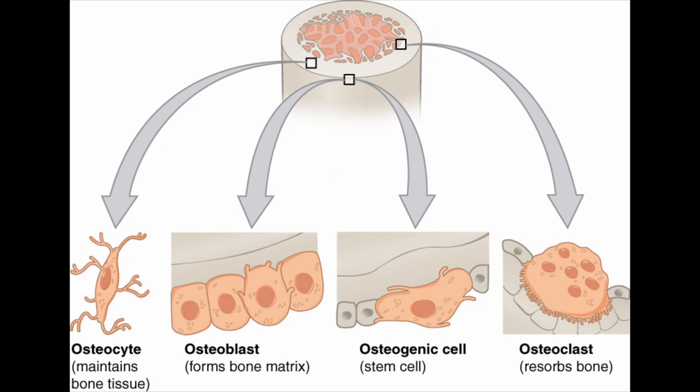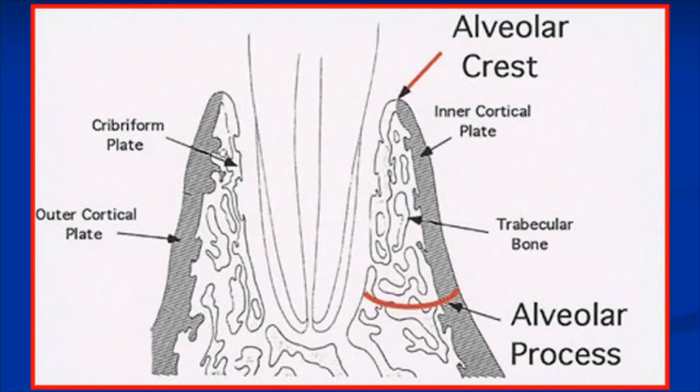Looking at this picture, we have cortical plates — both outer and inner — which are the stronger portions of the alveolar bone. We also have the soft and spongy trabecular bone. The layer of alveolar bone immediately adjacent to and contacting the root of the tooth has very fine small perforations inside it, with many blood vessels and nerves crossing through these perforations.